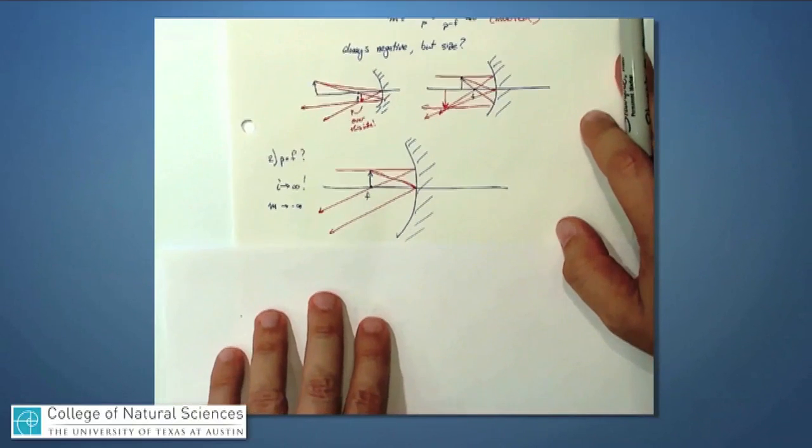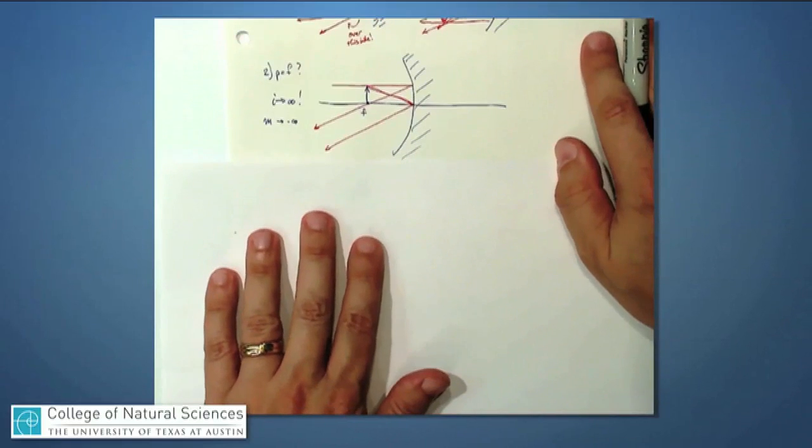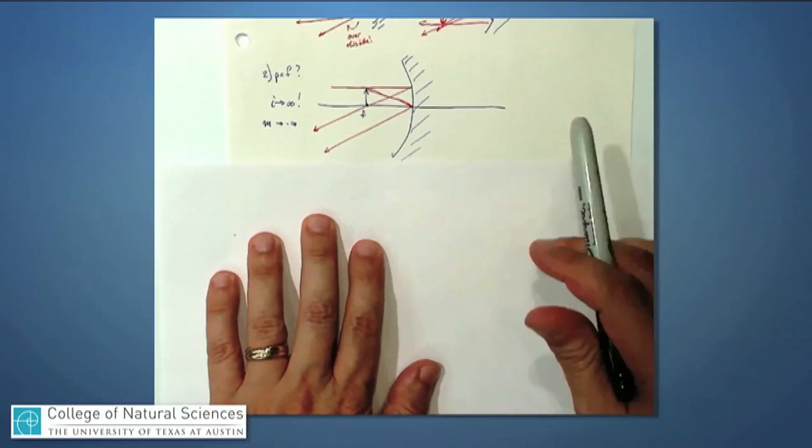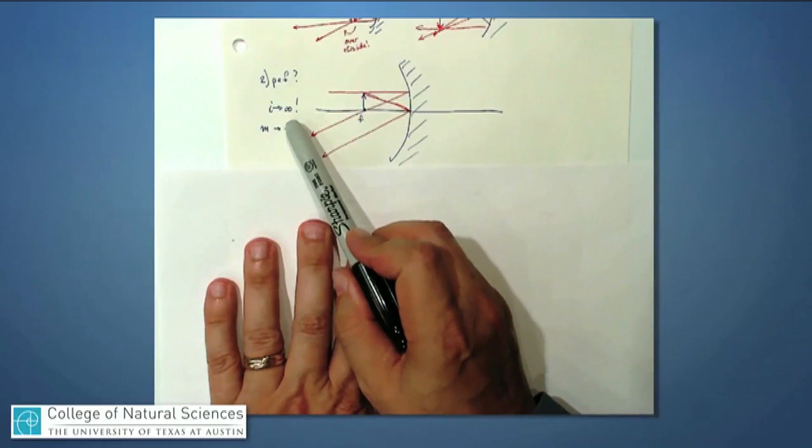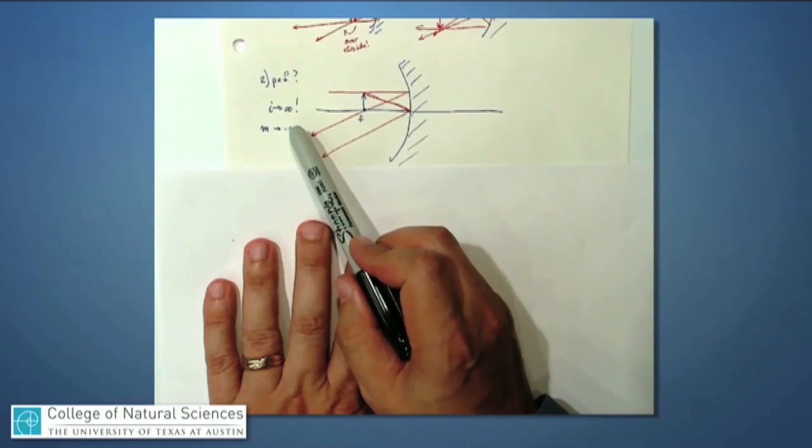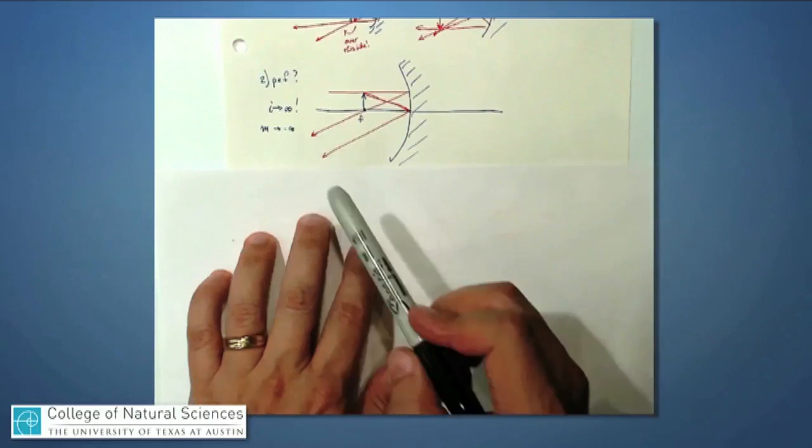I can also put the object exactly at the focal length. In that case, in my expression for what the image distance is, well I get one over zero, which is infinity, and that means i goes to infinity, and magnification goes to minus infinity.